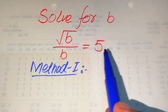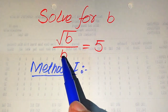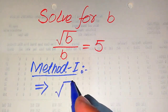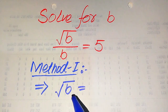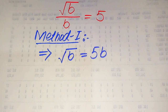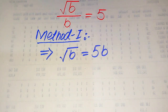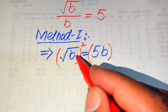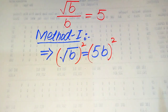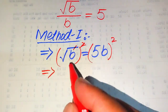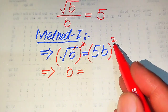In the first method, we move B to the right hand side. Here B is dividing on the left hand side; when we move it to the right hand side it is multiplied by 5. So after moving B we get square root of B equals 5 times B. To solve for B, we need to remove the square root sign, so we square both sides.